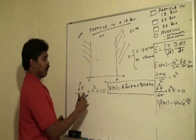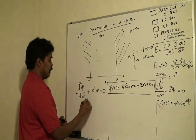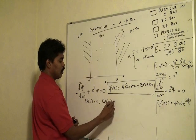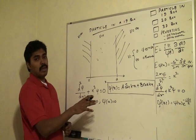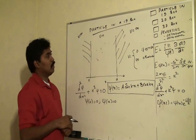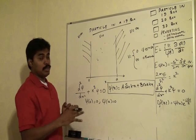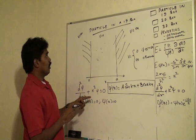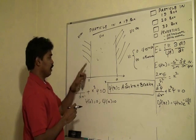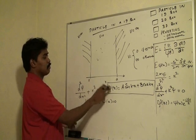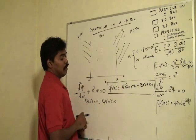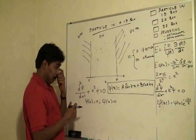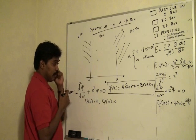Here the boundary conditions are: ψ(0) = 0 and ψ(a) = 0. This is the boundary condition for a particle in one dimension. When x = 0, ψ(x) = 0. By applying this boundary condition, we will be able to find the constants A and B.